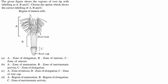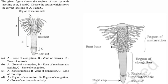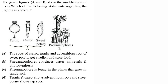A is the region of maturation, where root hairs grow. B is the region of elongation, where the root increases its length. C is the region of high cell division, also called the region of meristematic activity. Just below that you can see the root cap. So the answer is option D: A is region of maturation, B is region of elongation, and C is zone of meristematic activity.